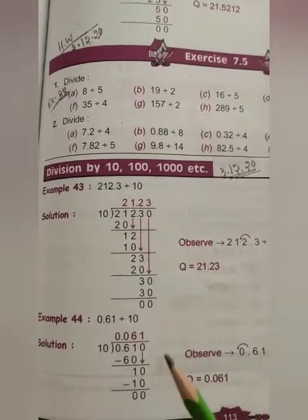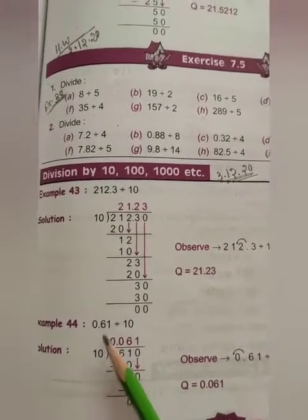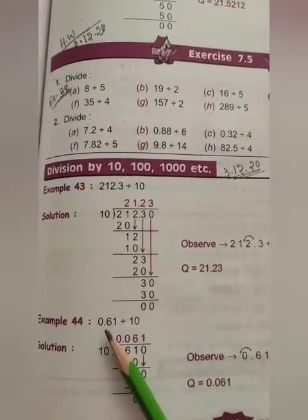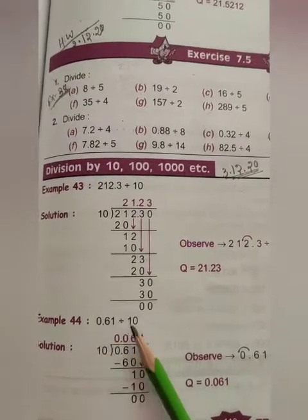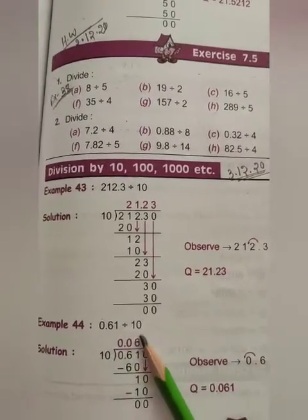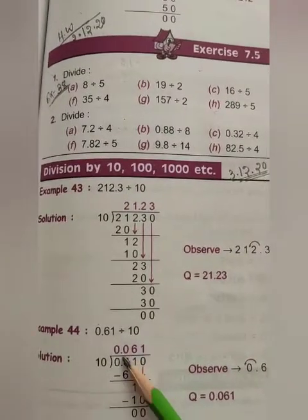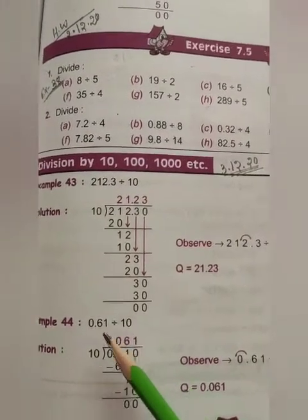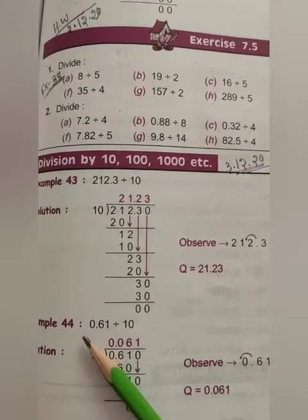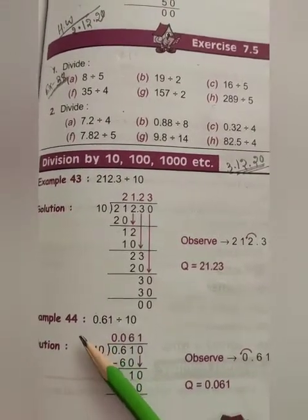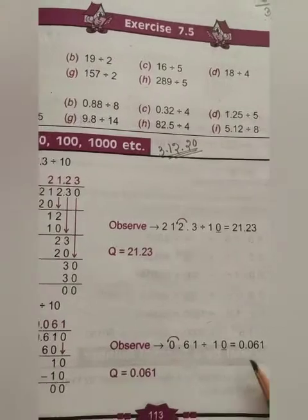Then next example you see, here also you observe, here decimal place is here. If we divide this decimal number with 10, then we get 0.061. This decimal point is moved left side by one place.